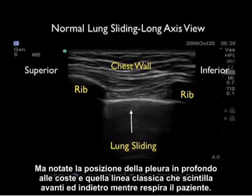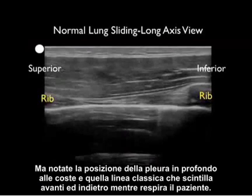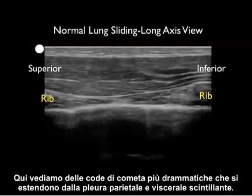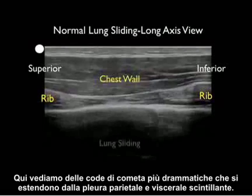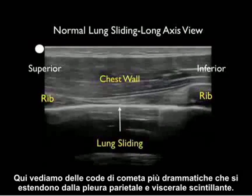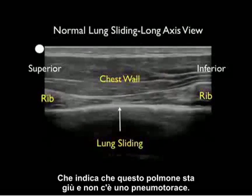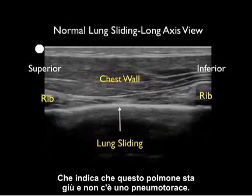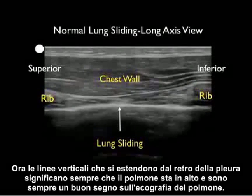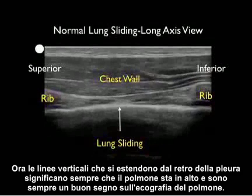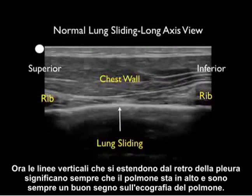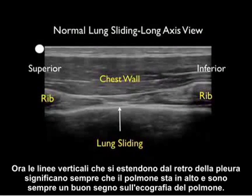Note the location of the pleura, deep to the ribs, and that classic shimmering line back and forth as the patient takes a breath. Here we see more dramatic comet tails coming off the shimmering parietal and visceral pleura. We see the comet tail shooting off the back, telling us that this lung is up and there's no pneumothorax. Vertical lines coming off the back of the pleura always mean that the lung is up and are always a good sign on lung ultrasonography.